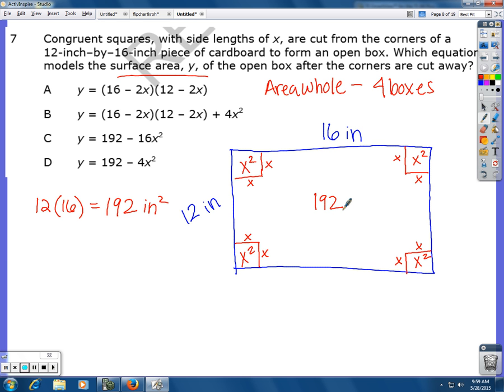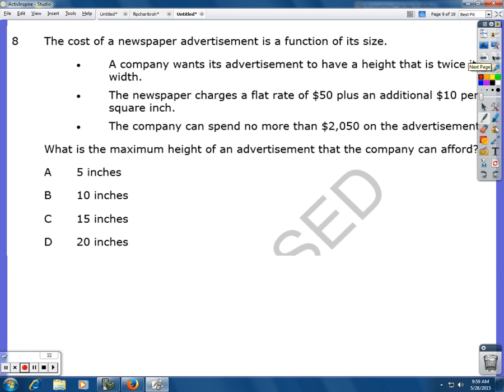So in order to get my area, I just have to do 192 for the whole thing minus four of the boxes.